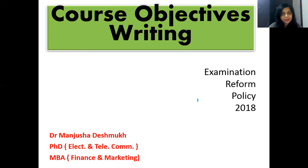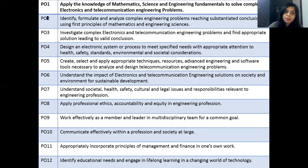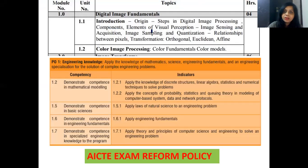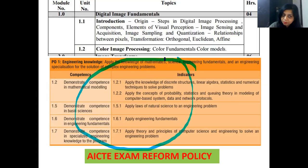Hello everyone. In this video I am explaining how to write course objectives of your subject according to AICTE's examination reform policy 2018. These are program outcomes PO1 to PO12, designed for every course according to branch and graduate attributes specified by AICTE. We have to use these POs for designing our course objectives and course outcomes.